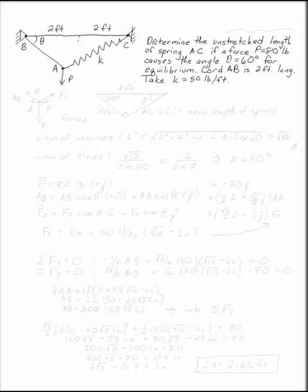To determine the unstretched length of spring AC, if a force P equals 80 pounds causes the angle theta equals 60 degrees for equilibrium. Cord AB is 2 feet long, and k is 50 pounds per foot.